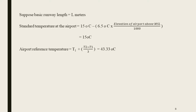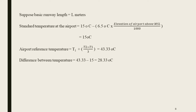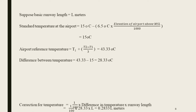The standard temperature is 15 degrees Celsius. The airport reference temperature is calculated as T1 plus (T2 minus T1) divided by 3, which gives 43.33 degrees Celsius. The difference between airport reference temperature and standard temperature is 43.33 minus 15, that is 28.33 degrees Celsius.